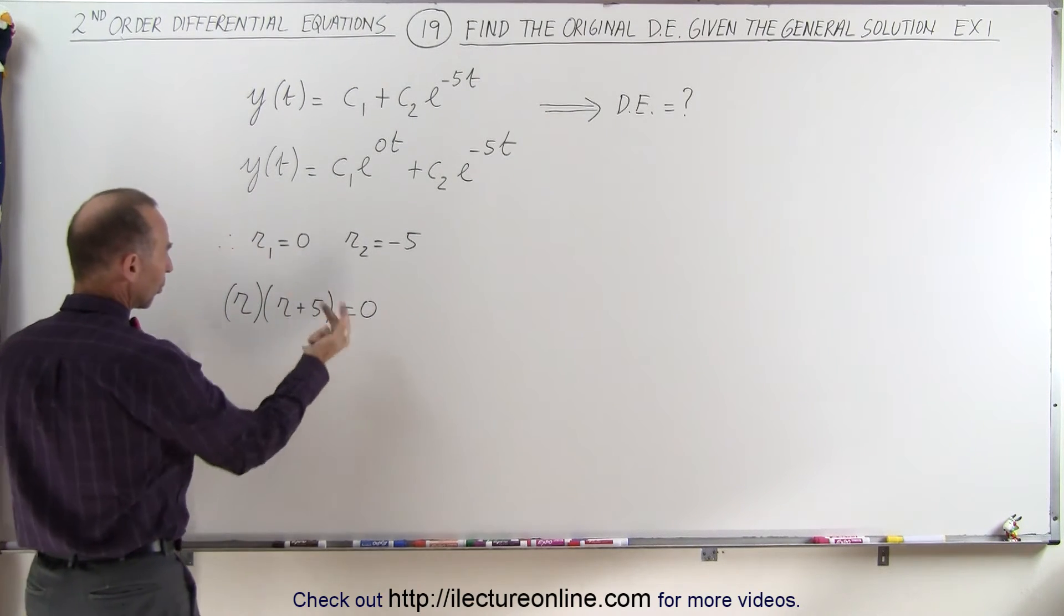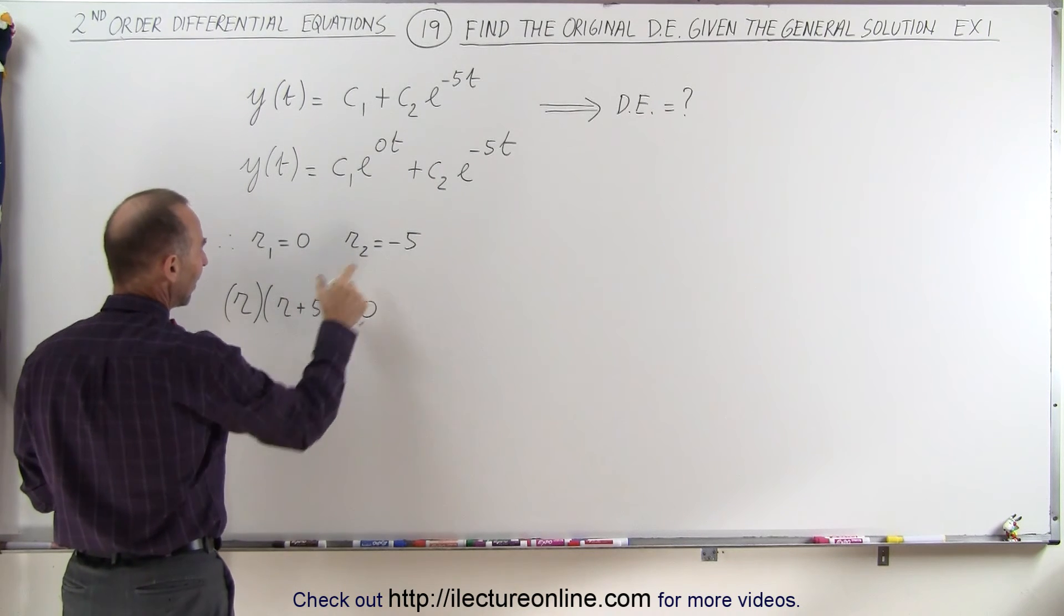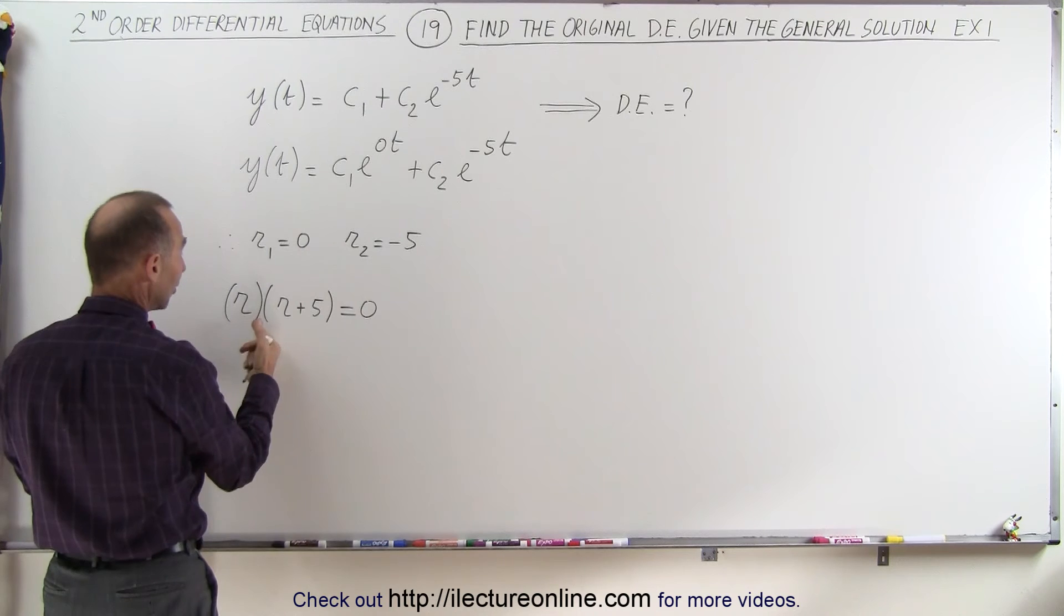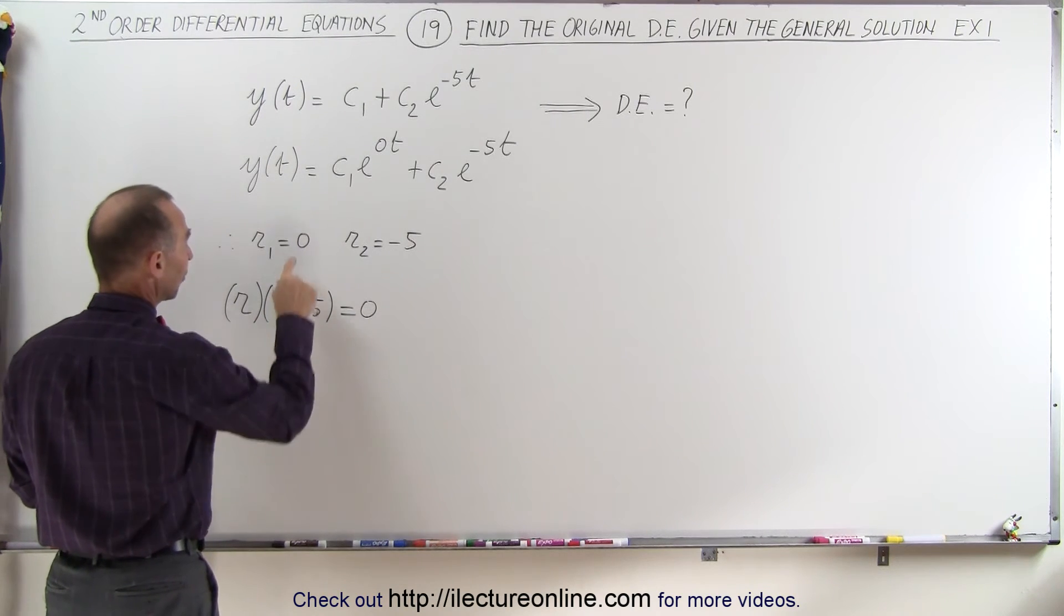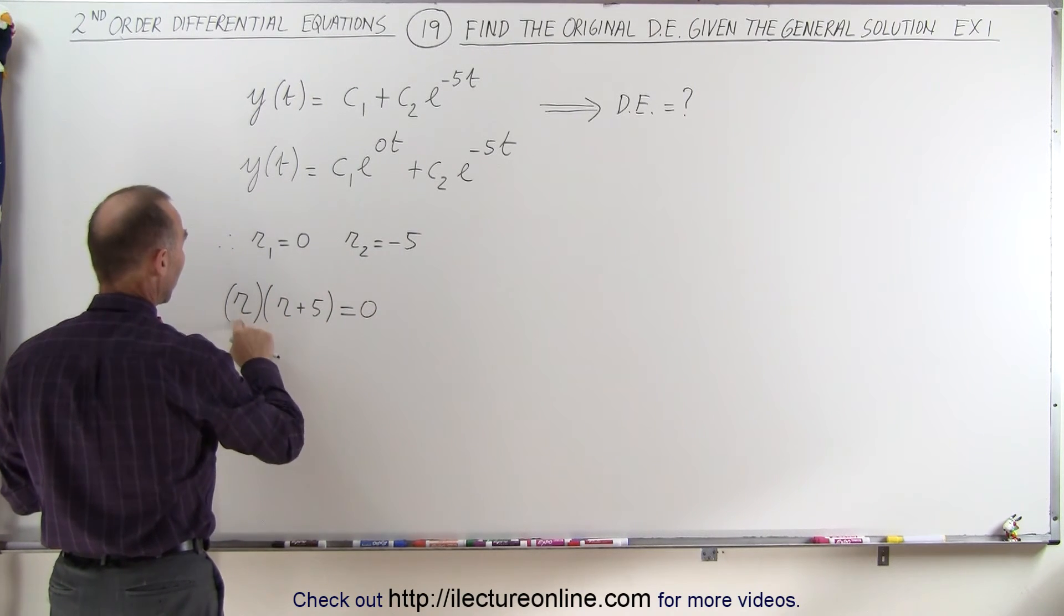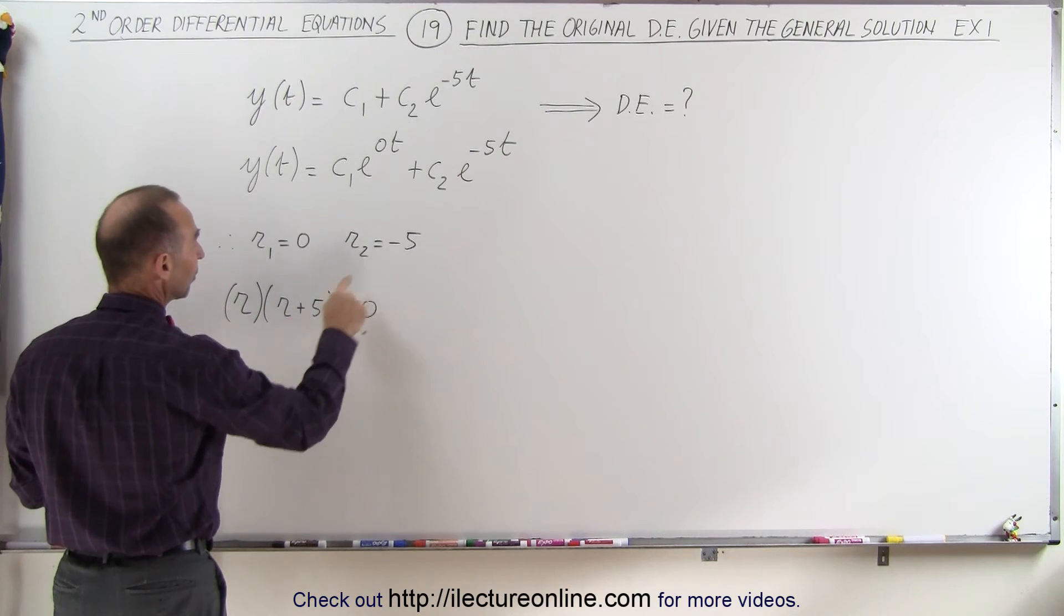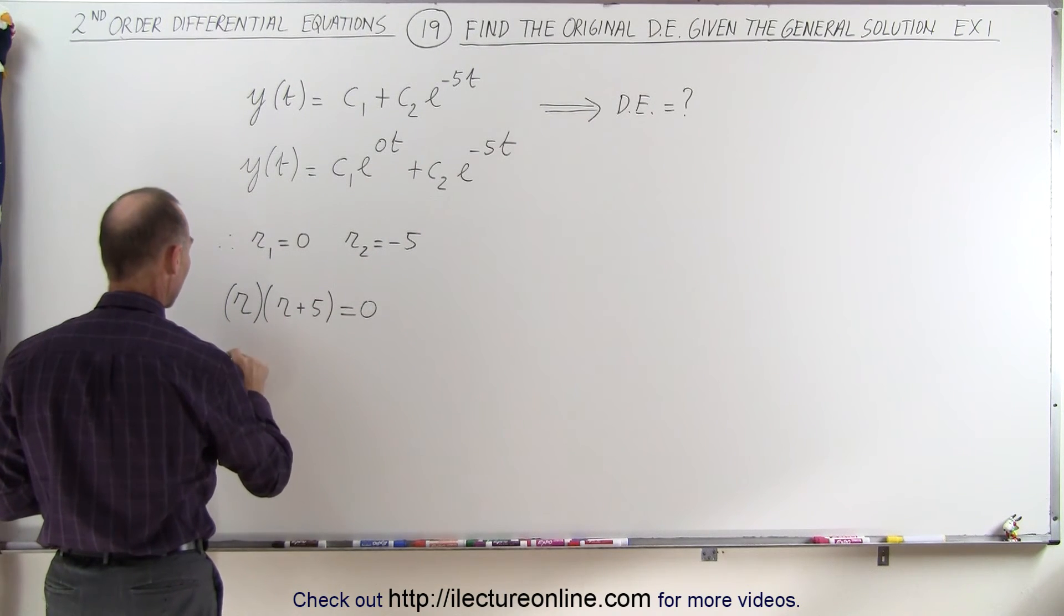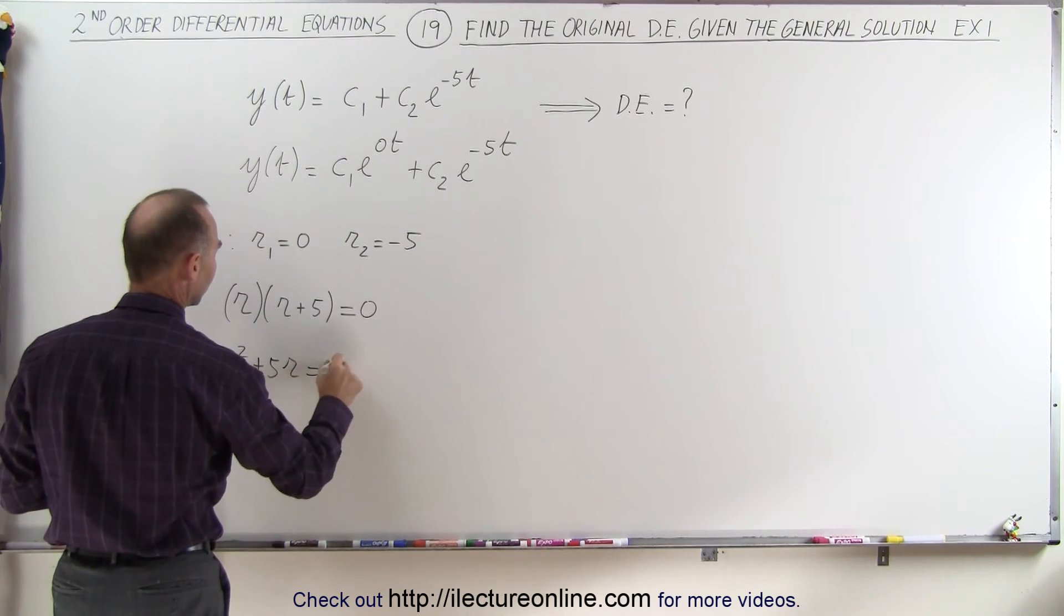So what I've done is work backwards. If the roots are 0 and negative 5, then I have r plus 5 times r plus 0 equals 0, because that gives us the two roots, r equals 0 and r equals negative 5. Then when I multiply this out, I end up with r squared plus 5r is equal to 0.